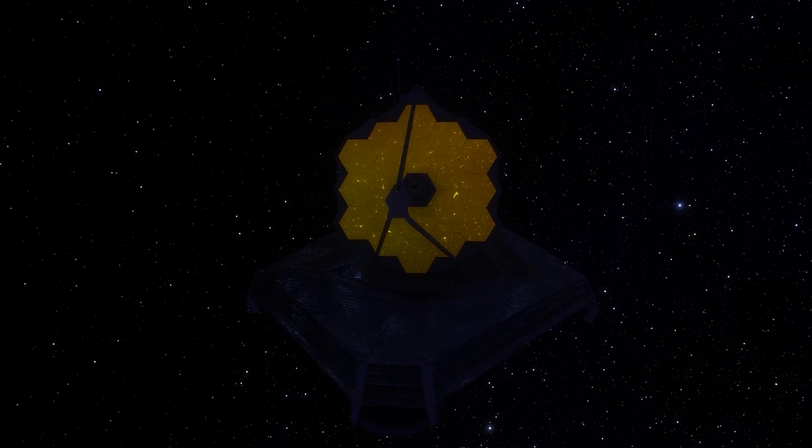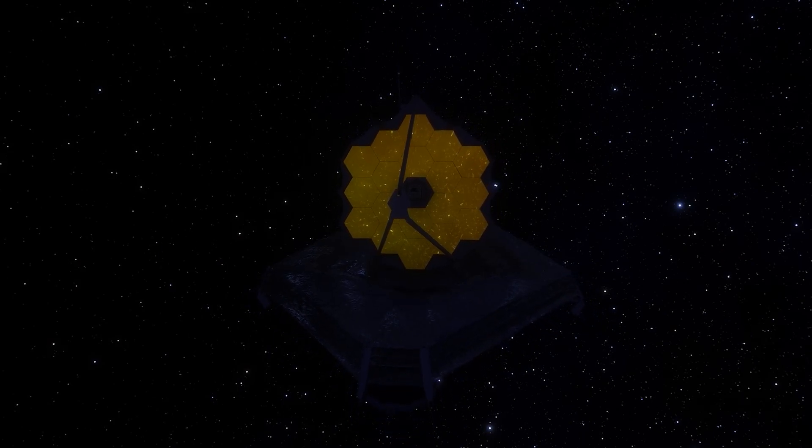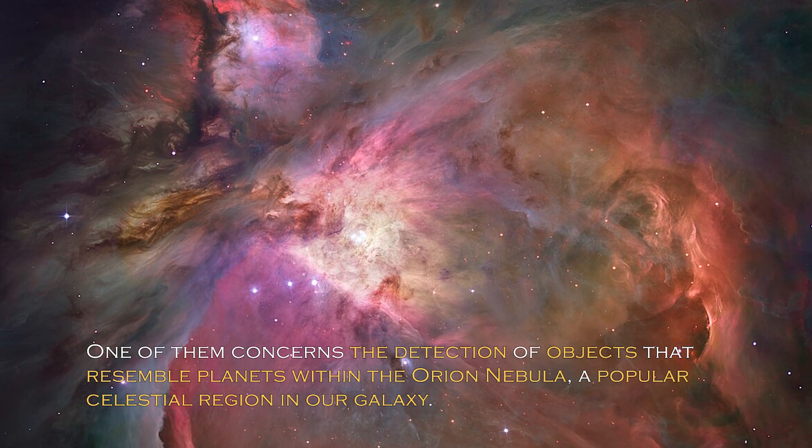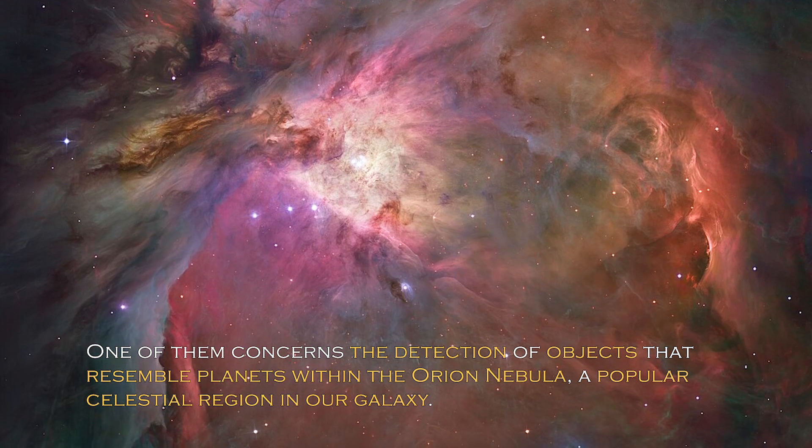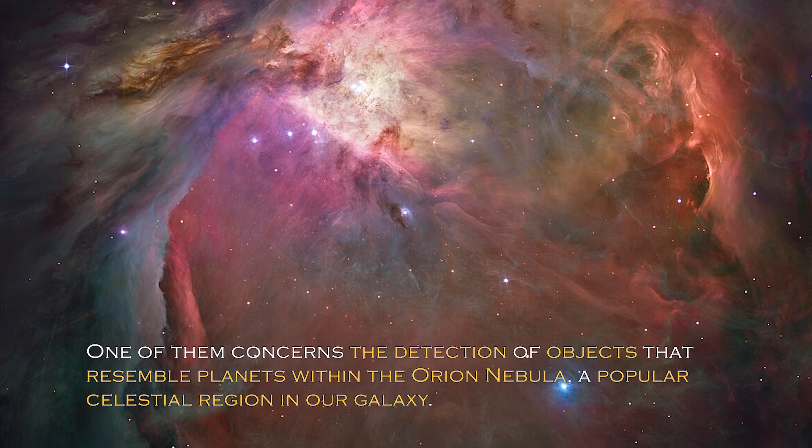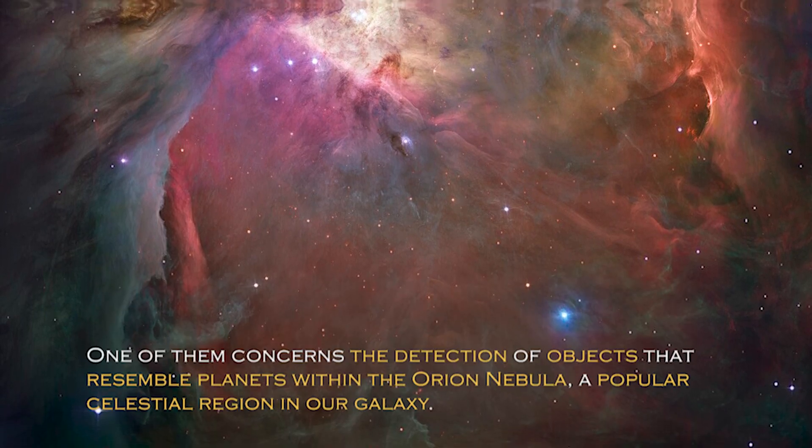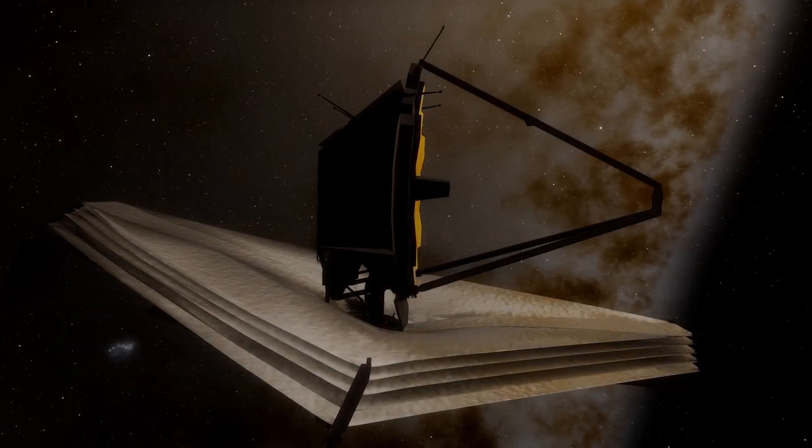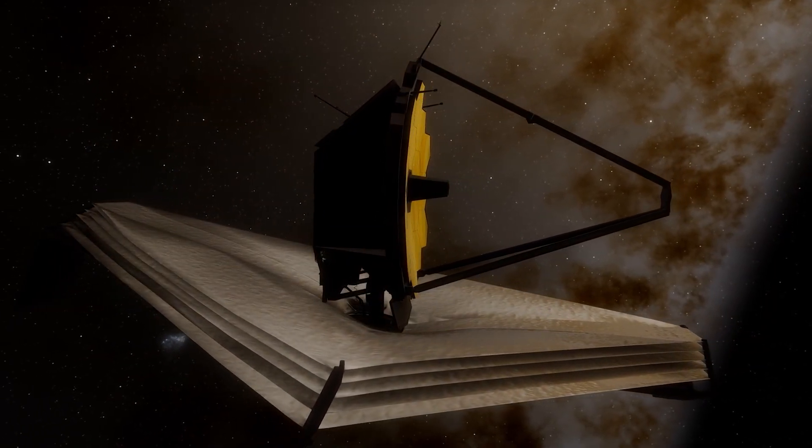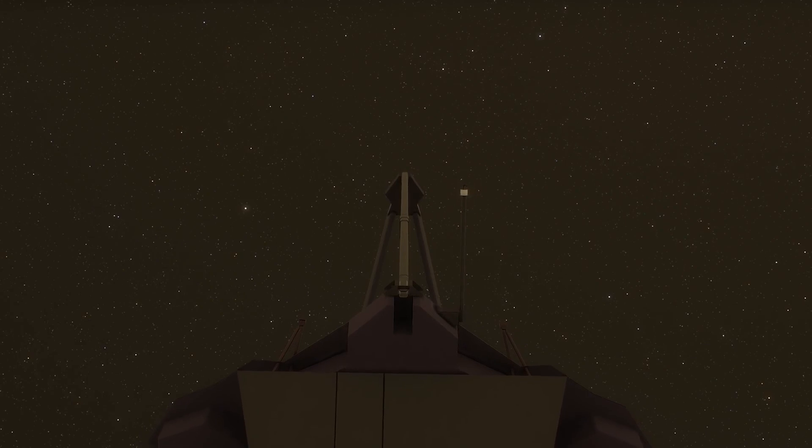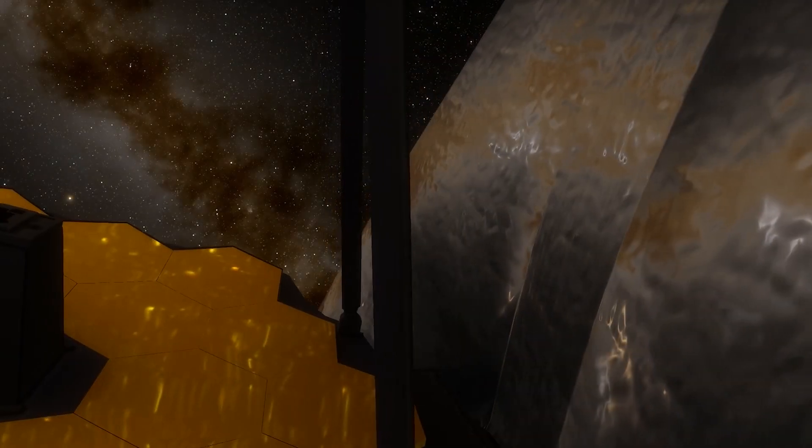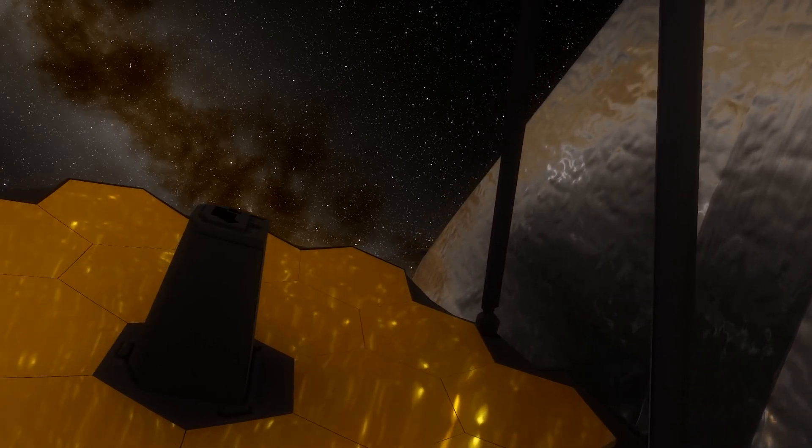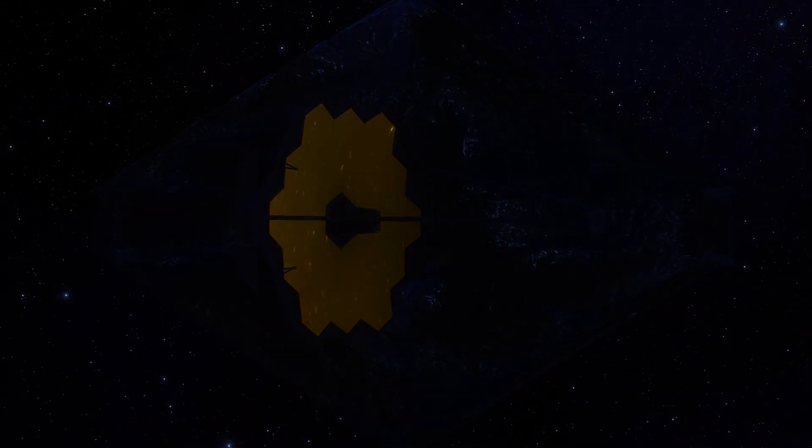The James Webb telescope has recently made remarkable discoveries. One of them concerns the detection of objects that resemble planets within the Orion Nebula, a popular celestial region in our galaxy. Previous studies had not revealed such objects in this cosmic cloud of dust and gas until the James Webb made their detection possible. These discoveries are just a sampling of several interesting findings that the James Webb telescope has recently unleashed.